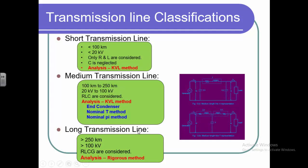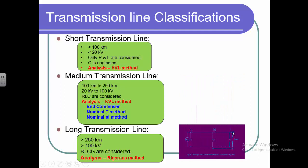The long transmission line has a distance greater than 250 km and a voltage range of more than 200 kV. In this analysis we assume all four parameters — resistance, inductance, capacitance and conductance — are completely distributed all over the length of the transmission line, rather than treating them as lumped parameters as in short or medium transmission line analysis. The method used for this accurate analysis is called the rigorous method. Let's go through the analysis for all three categories one by one.